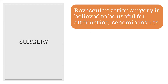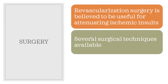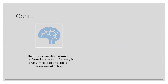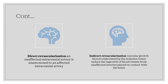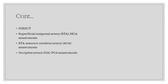Revascularization surgery is believed to be useful. There are several surgical techniques, classified as direct and indirect. Direct revascularization involves anastomosing an extracranial artery to an intracranial artery — for example, the superficial temporal artery (STA) anastomosed to the MCA. Indirect revascularization takes advantage of the vascular factors of the ischemic brain by placing vascularized tissue on top of it to promote neo-angiogenesis. Direct techniques include STA-MCA, STA-ACA, and OA-PCA anastomoses.